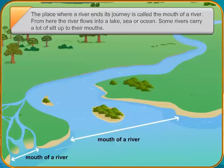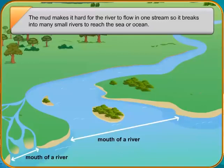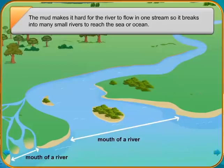River Ganga is a snow-fed river. River Godavari is a rain-fed river. The highest waterfalls in India are the Jog Falls in Karnataka. The Ganga and Brahmaputra rivers form the largest delta in the world called the Sundarbans.